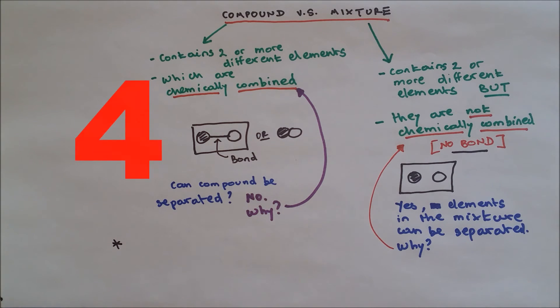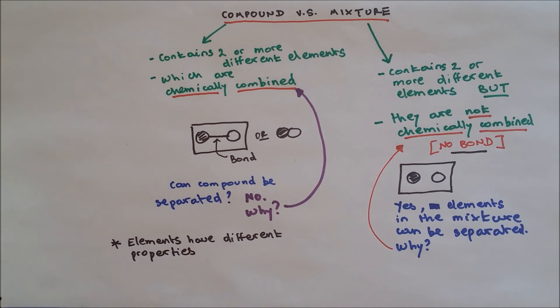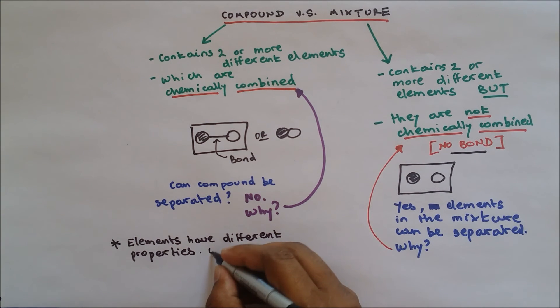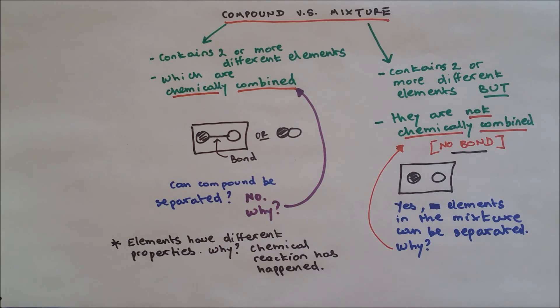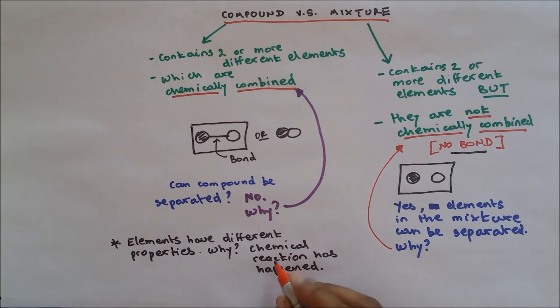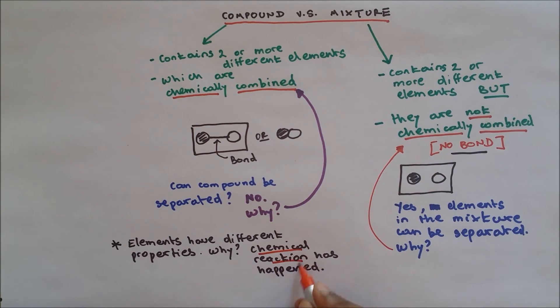And finally, I would like to tell you about the properties of both compounds and mixtures. Now, elements have different properties when they're chemically combined and formed into a compound. Why? Because chemical reaction has happened.